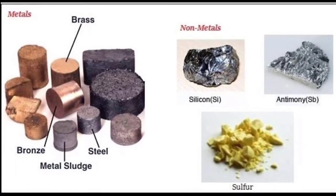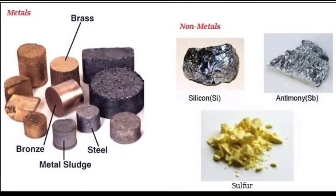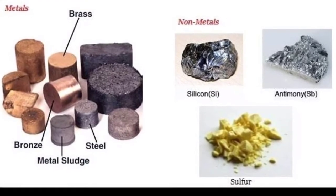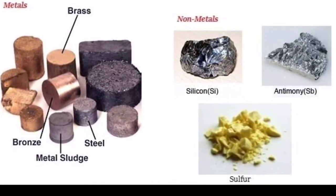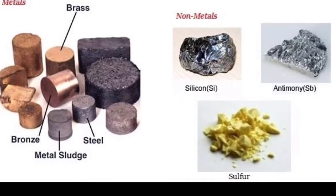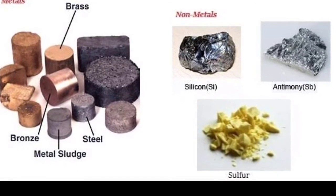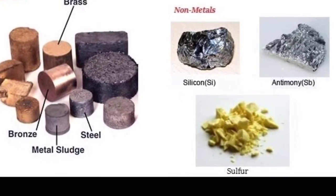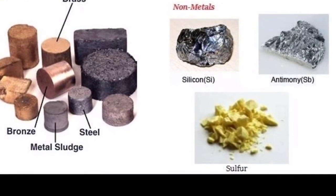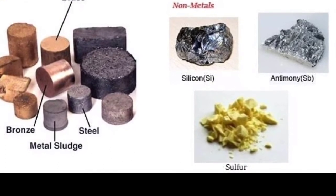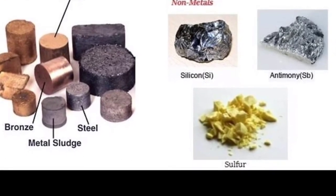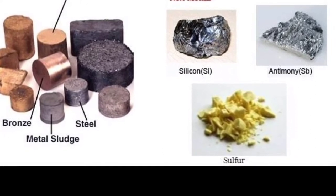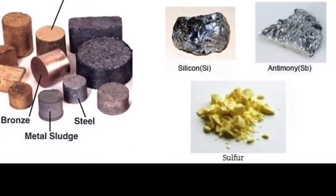Distinguish between metals and non-metals. As you can see in this picture, metals are brass, steel, metal sludge, and bronze, while non-metals are silicon, antimony, sulfur, and many more. Now let us study the properties of metals and non-metals in detail.